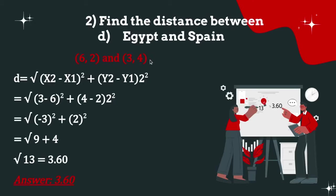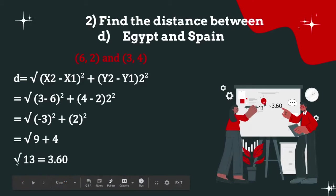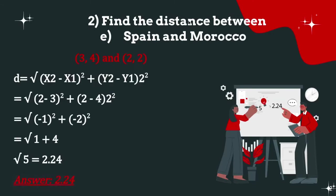Find the distance between Egypt (6, 2) and Spain (3, 4). Using the distance formula: √((3 - 6)² + (4 - 2)²) = √((-3)² + (2)²) = √(9 + 4) = √13. Using a calculator, we get 3.60.